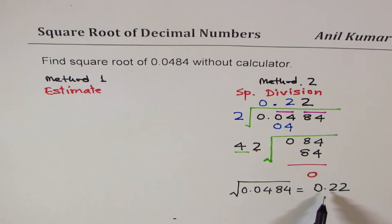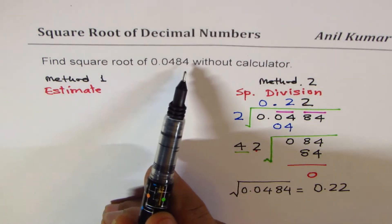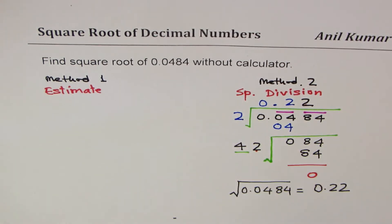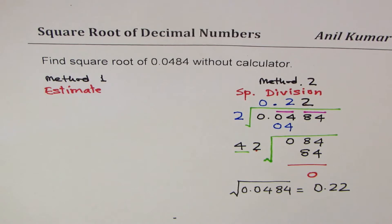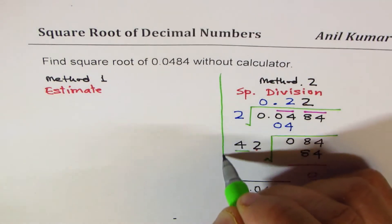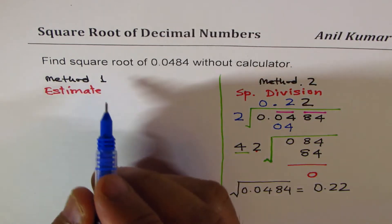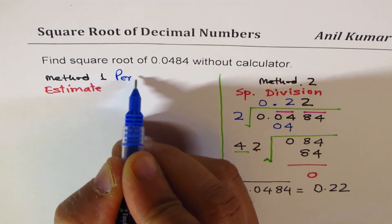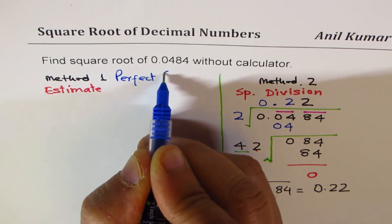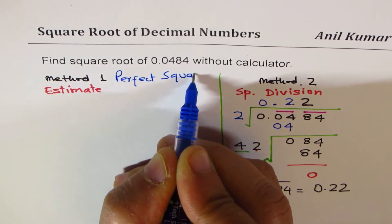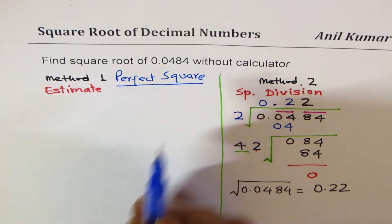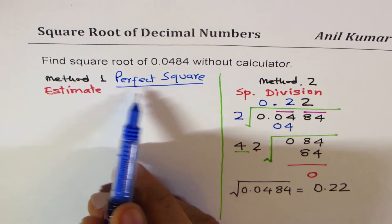It makes sense. If you multiply 0.22 by itself, you expect decimal after four places. That was a quick way of finding square root of any number. We also see that this is a perfect square.